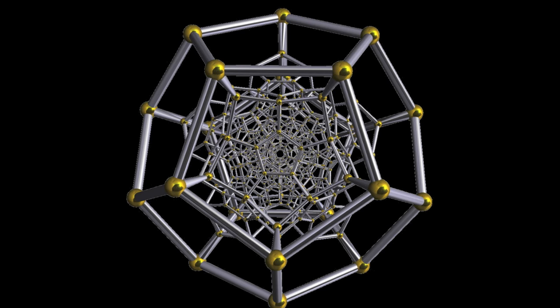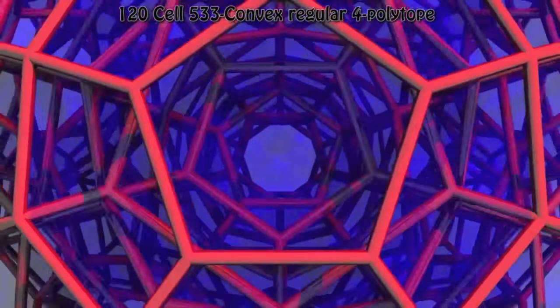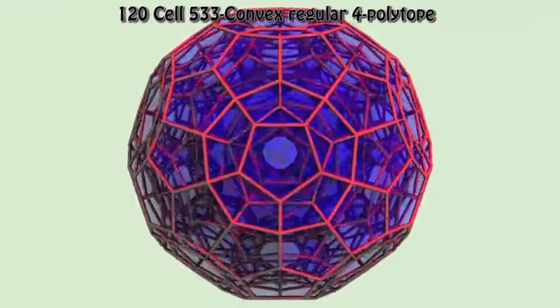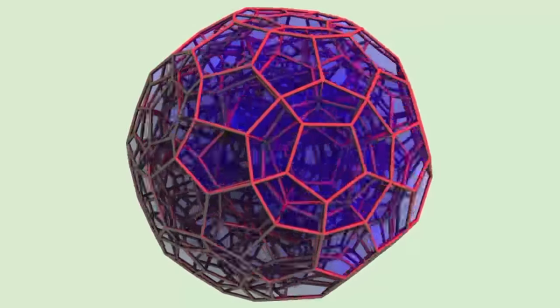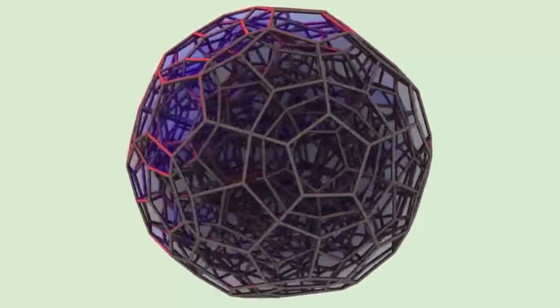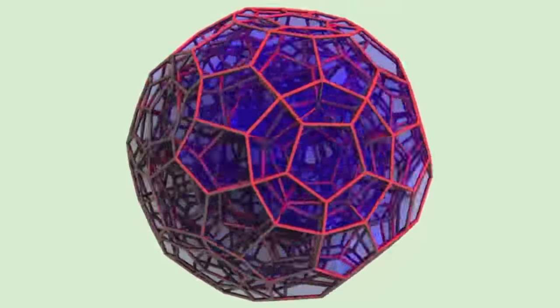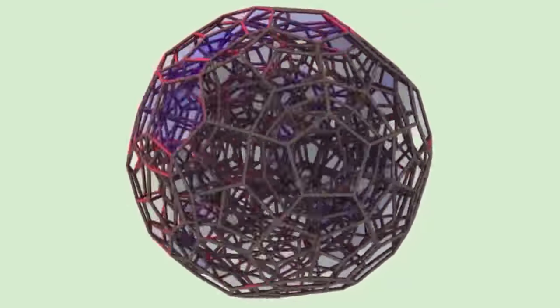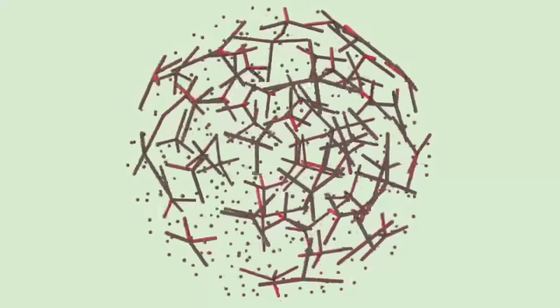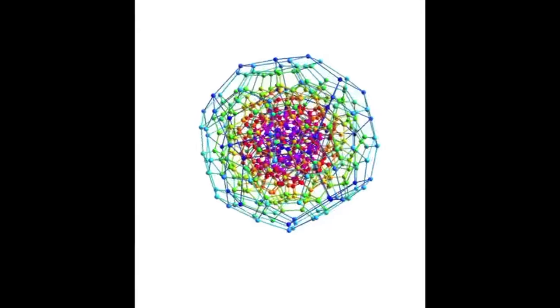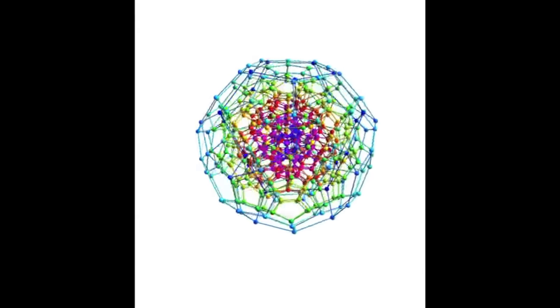The counterpart of the dodecahedron in three dimensions, the 120-cell, is dual with the 600-cell in four dimensions. Because the 600-cell is comparable to the icosahedron in three dimensions, the 120-cell and 600-cell are dual-embedded to one another. The 120 cell faces of the 120-cell correspond to the 120 vertex corners of the 600-cell, and the 600 cell faces of the 600-cell correspond to the 600 vertex corners of the 120-cell.